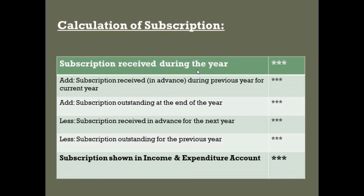First, subscription received during the year — this is the subscription shown on the debit side of the receipt and payment account, meaning the total subscription received during the year. To calculate the subscription to be shown in the income and expenditure account, we will add subscription received in advance during the previous year for the current year, because it belongs to the current year.